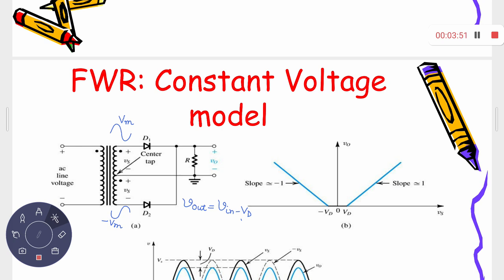If the input is less than Vd but greater than 0, we are in the region where diode D1 is off — it acts as an open switch, so no current flows, and the output voltage is zero. In the negative half cycle, when the magnitude of the input voltage is greater than Vd, diode D2 will be on and Vout = Vin − Vd, but remember Vin is negative at that time.